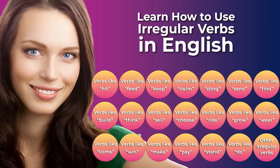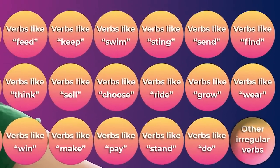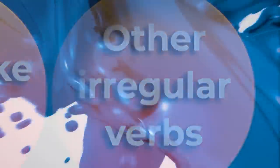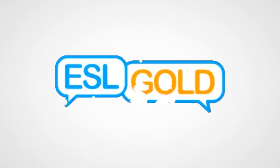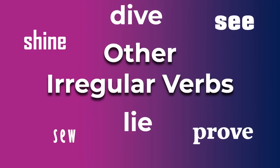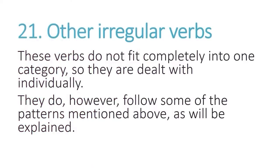These 21 short videos will help you quickly see and understand the relationships and patterns among various types of irregular verbs in English so that you can use them correctly. This video will help you see relationships among various types of irregular verbs. The key to understanding irregular verbs is to look for and notice the patterns. These verbs do not fit completely into one category, so they are dealt with individually.